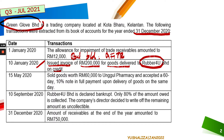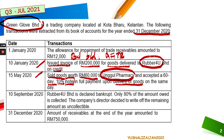Goods were also sold on credit for $60,000 to another company, Unggul Pharmacy, and a 60-day note at 10% interest was accepted in full payment for the delivery of the goods. So goods were delivered and a note was accepted — this is notes receivable — received from Unggul Pharmacy on 15th of May.